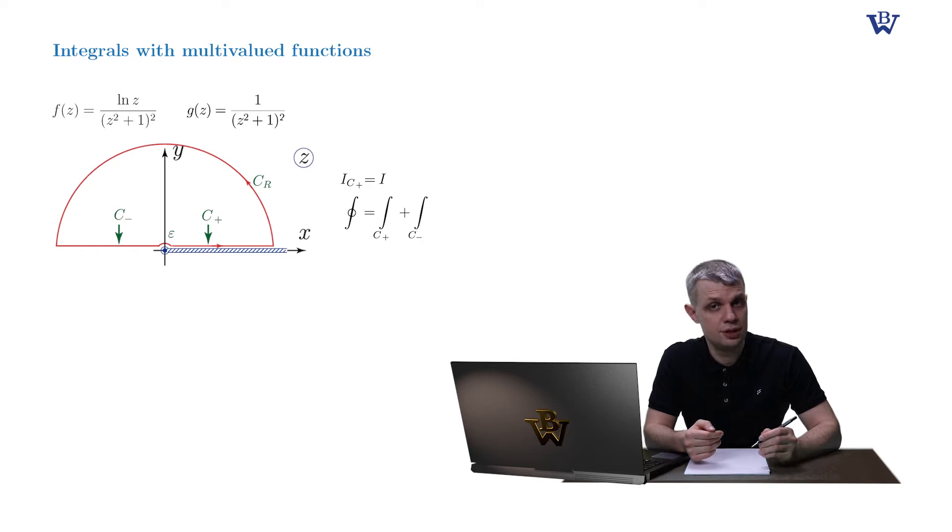Let's see how the situation changes here. To compute c-minus integral, we need to introduce parameterization consistent with our choice of the regular branch of the log function. For example, we have two obvious choices: z equals rho times e to plus or minus i pi.